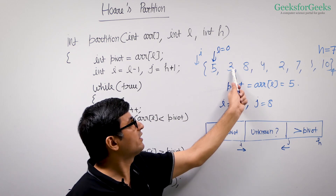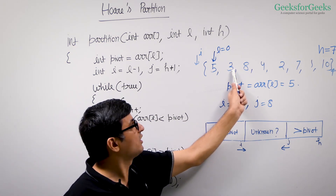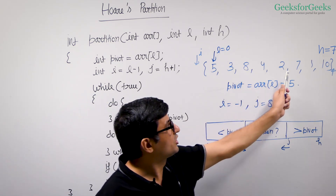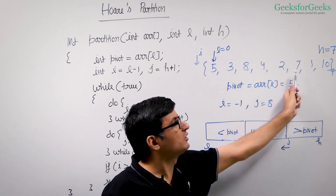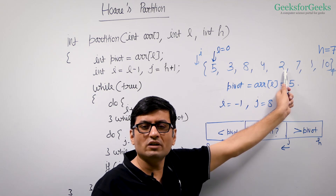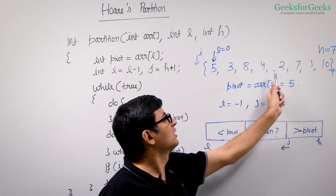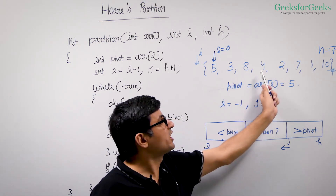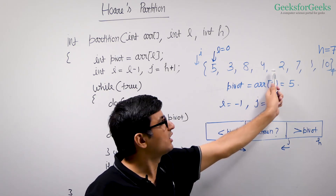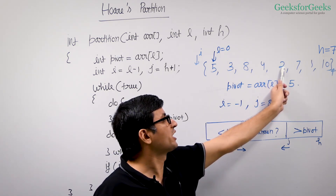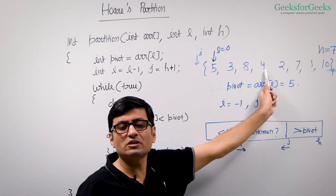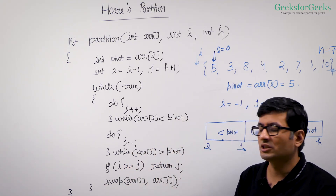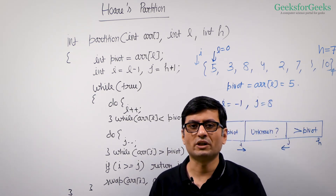You increment i again. Three is smaller, so you go to the next element. Eight is greater, so you stop i there. Then j starts moving — it is greater, so you continue. You find an element smaller than pivot, so you stop j there. You swap these two — eight and two. You increment i again; if it's smaller you continue, then you stop. You decrement j and stop because this element is smaller. Now i has crossed j, so you simply return j. That's the idea of Hoare's partition algorithm.